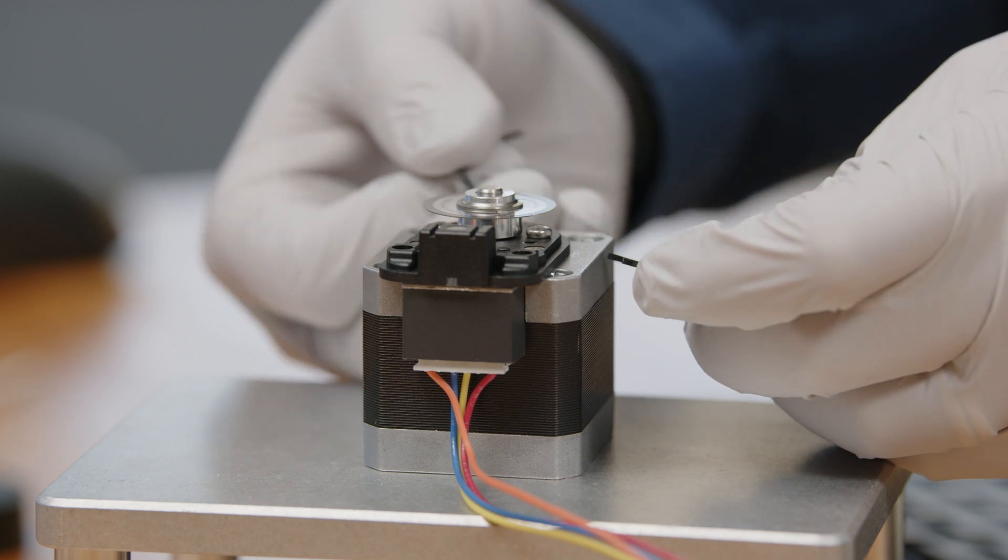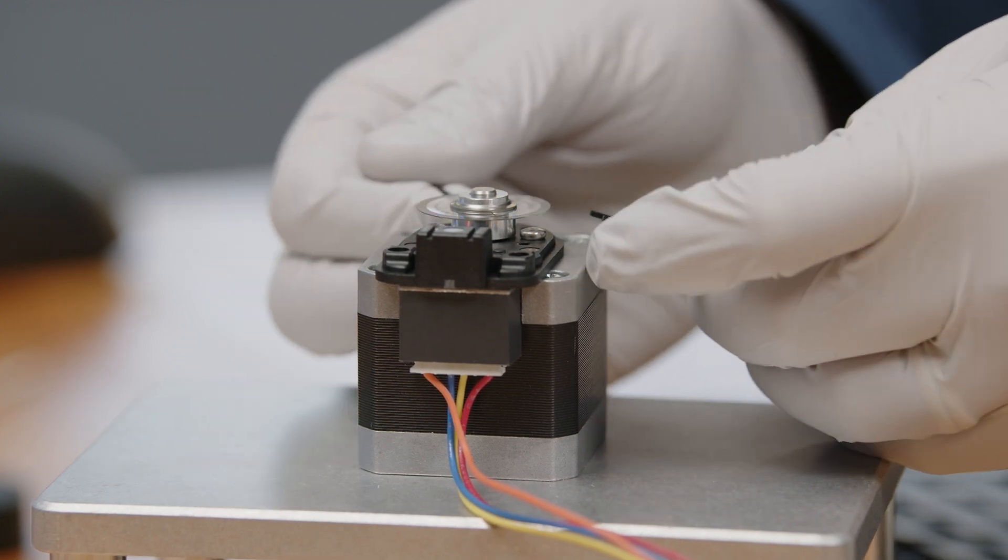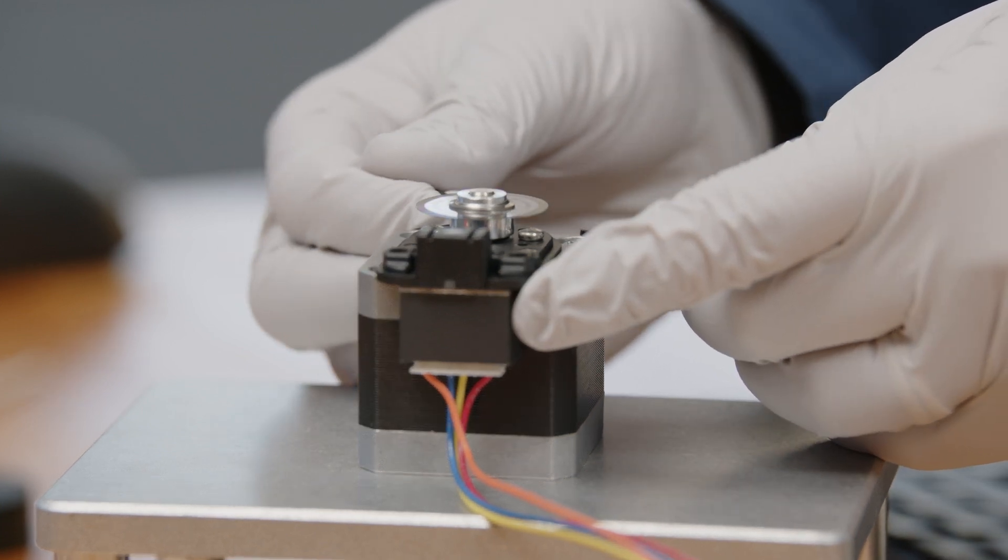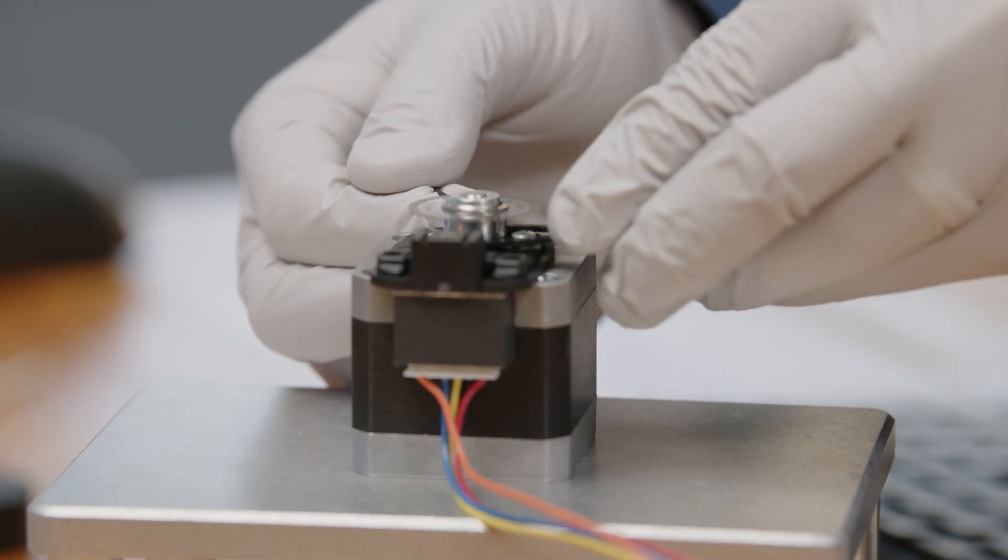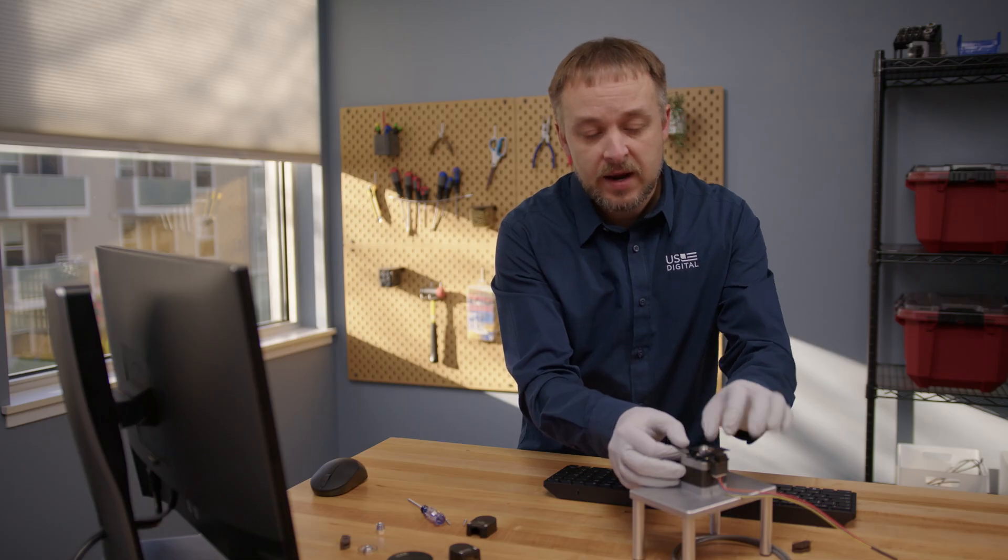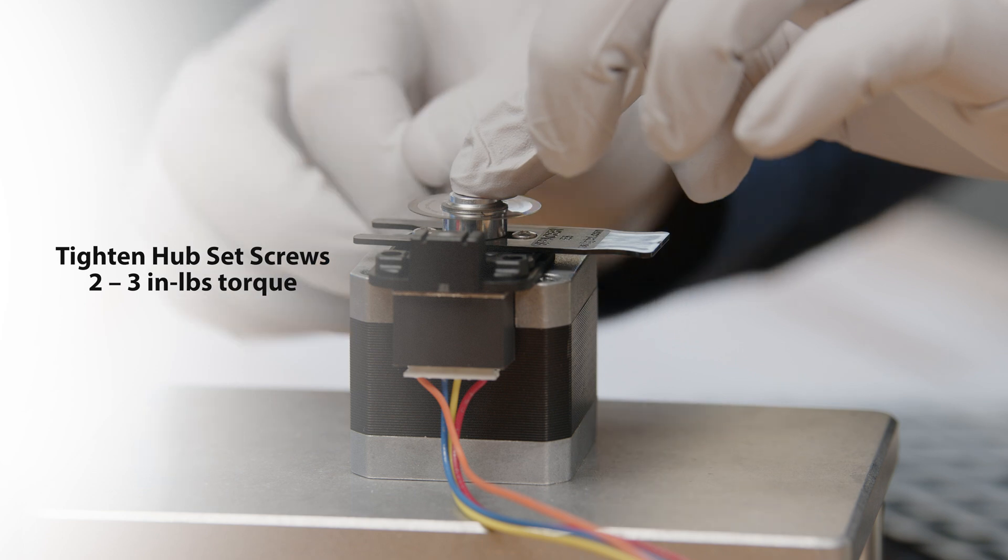We can do this by loosening the set screw. We'll have to move this up on the shaft slightly. Slide that spacer tool underneath and then press that back down so that it fits snugly against that spacer tool and retighten the set screw.